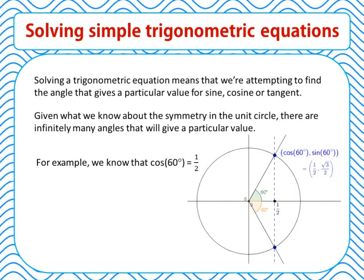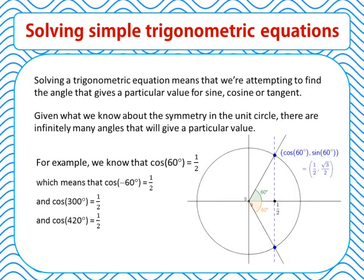For example, we know that cos of 60 degrees is equal to 1 half — that is, at an angle of 60 degrees in the unit circle, the x-coordinate of the point on the unit circle is 1 half. There are a number of other ways to describe this same angle, and there is also an angle in the fourth quadrant that gives an x-coordinate of 1 half. So cos of negative 60 degrees equals 1 half, cos of 300 degrees equals 1 half, cos of 420 degrees equals 1 half, and so on, adding 360 degrees each time as we continue to lap around the unit circle.